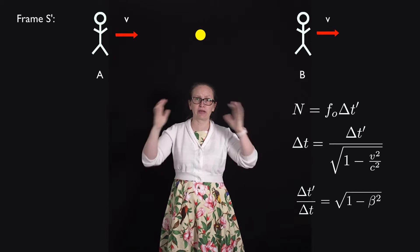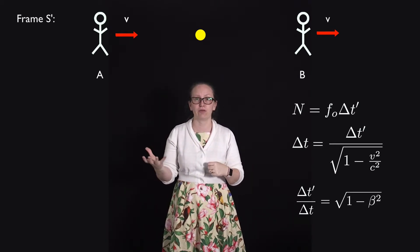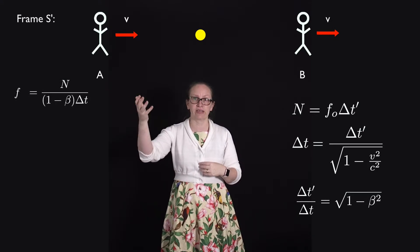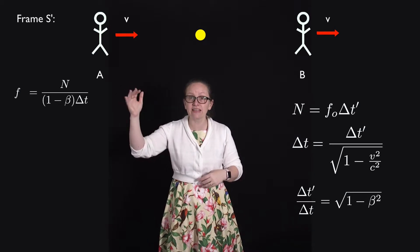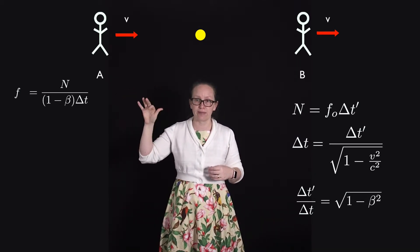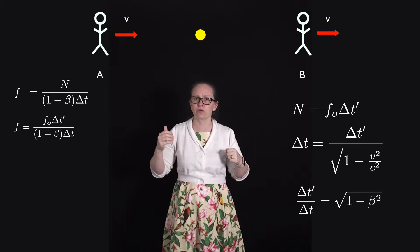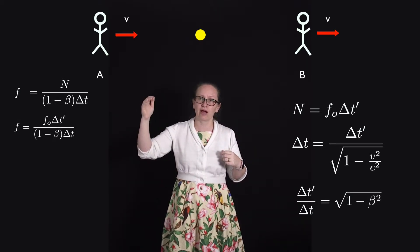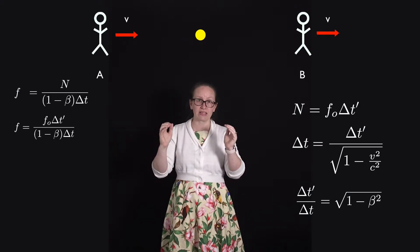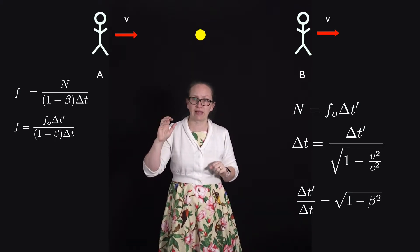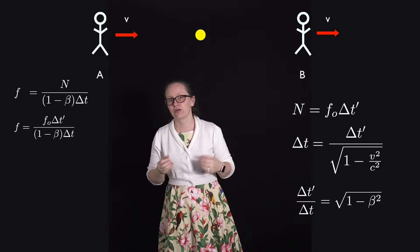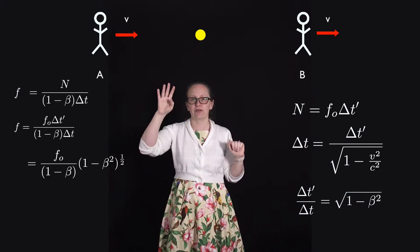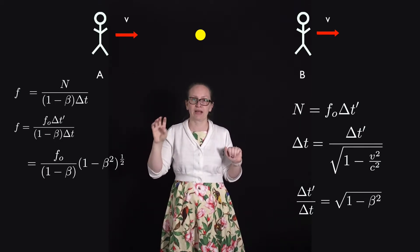We can now combine all this with the equation for the frequency measured in the unprimed frame. Replacing N with F0 times delta T prime, we get F equals F0 times delta T prime over delta T, divided by (1 minus beta). Replacing delta T prime over delta T with the time dilation expression gives F equals F0 times (1 minus beta squared) to the power of one-half, divided by (1 minus beta).